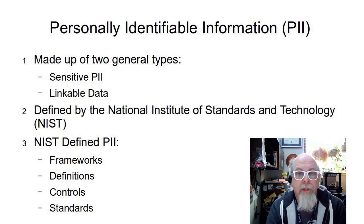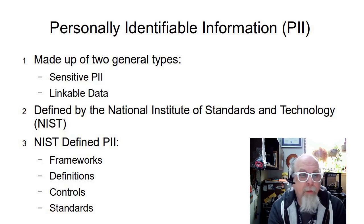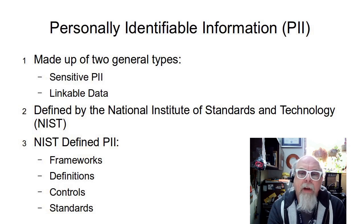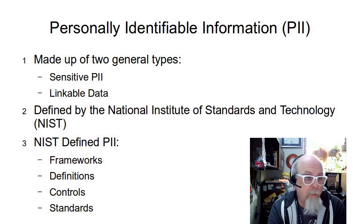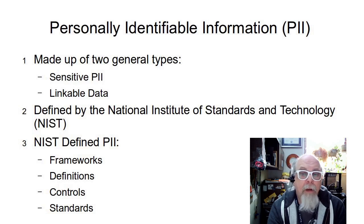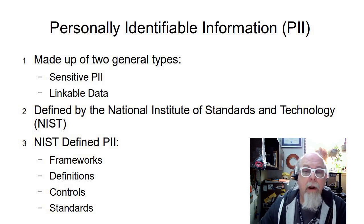Personally Identifiable Information, or PII, is generally made up of two types: sensitive PII and linkable data, and there'll be slides on each of those. PII is defined by the National Institute of Standards and Technologies, NIST, and in the book there's a link to the documentation about those specific standards. The NIST standards define what PII are — the frameworks, controls, and standards for how PII are to be properly handled by a system.